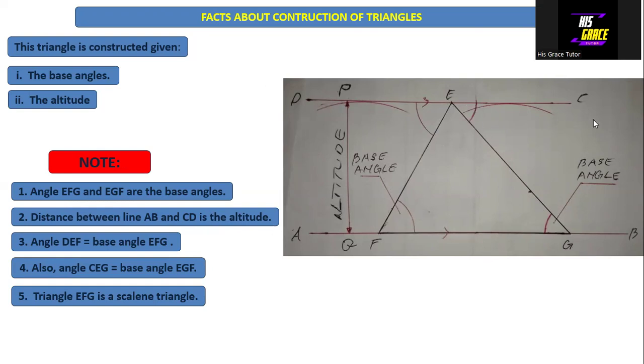So line AB and line CD are parallel to each other and distance between them is equal to the given altitude. That is number two.